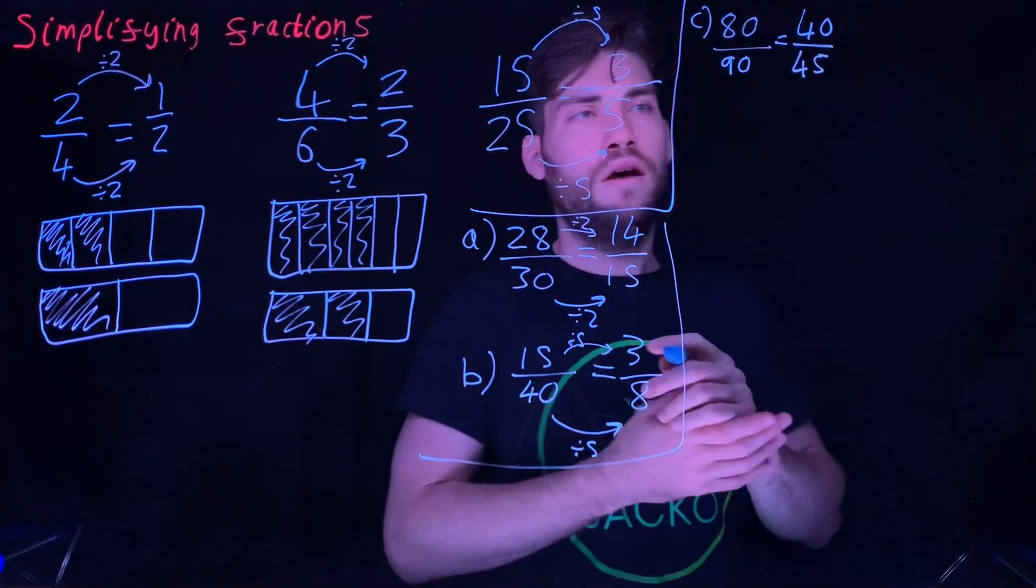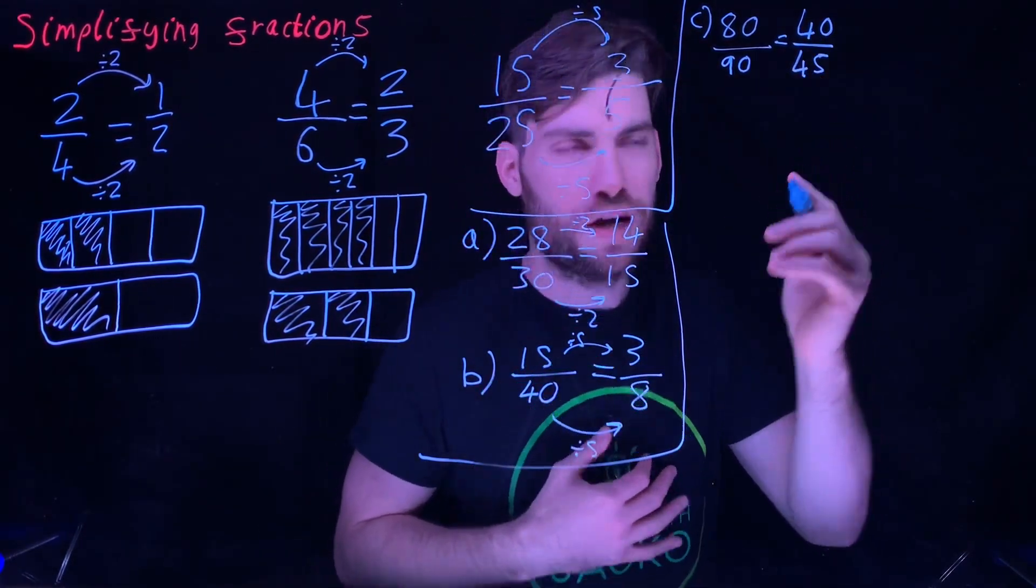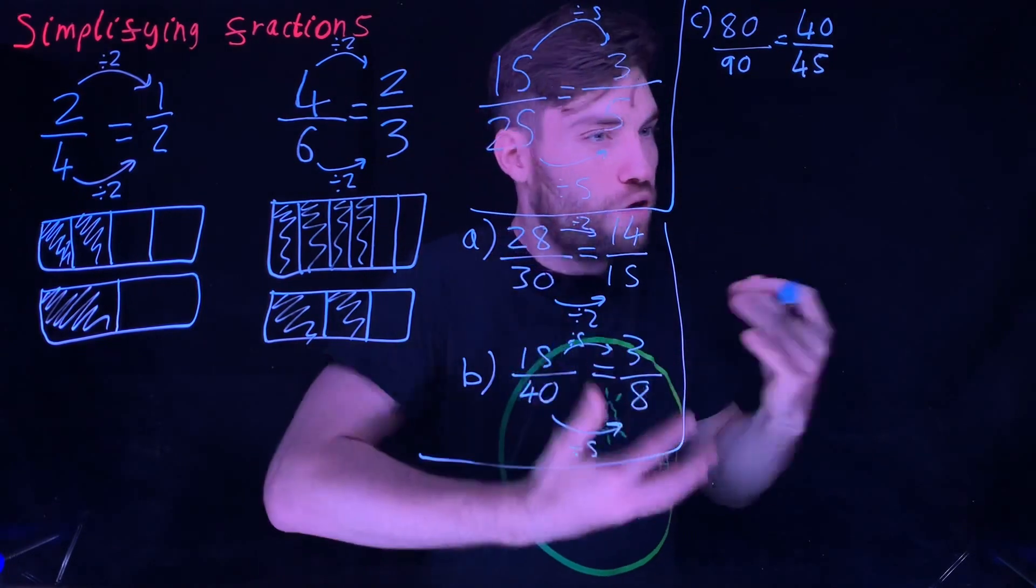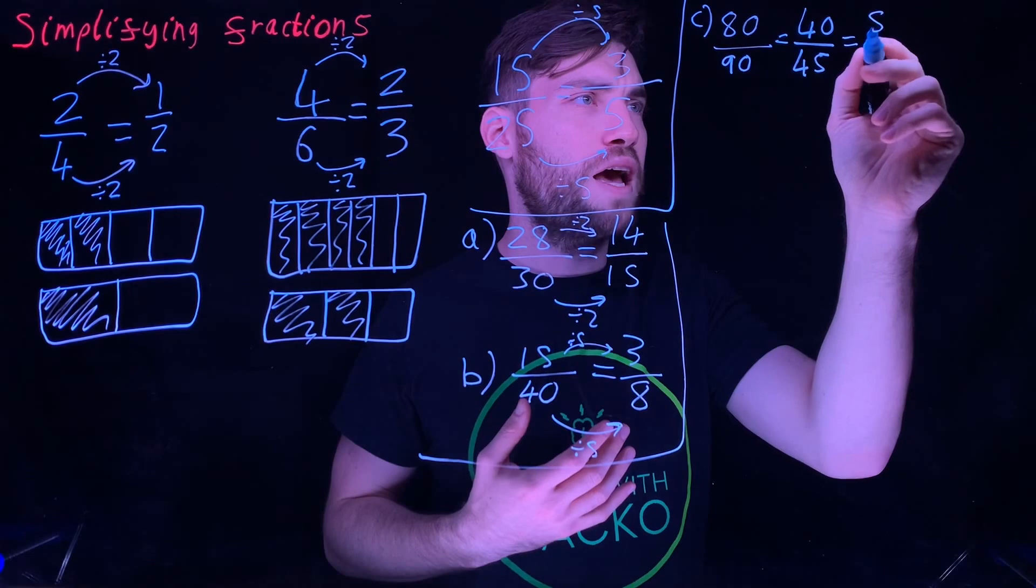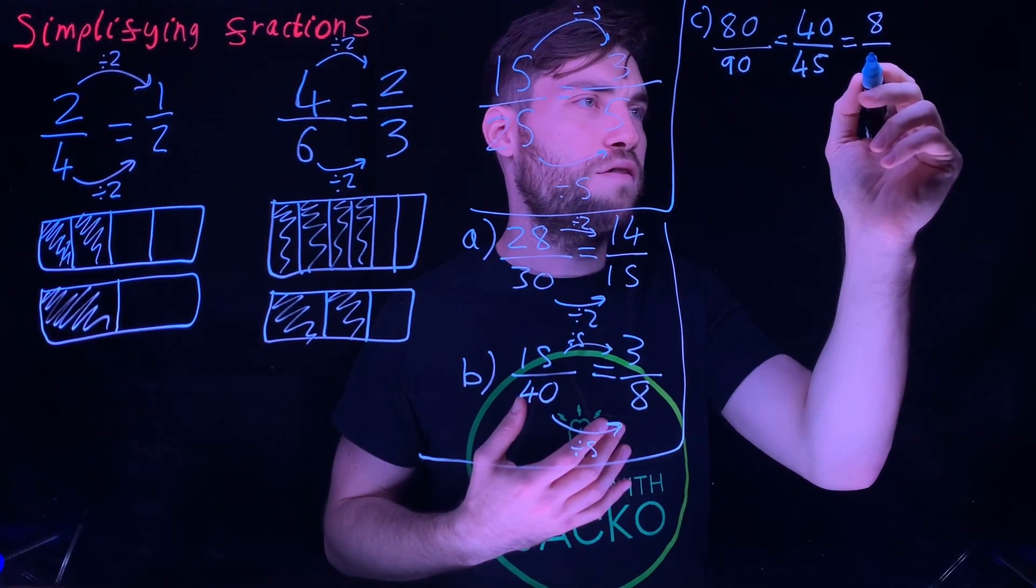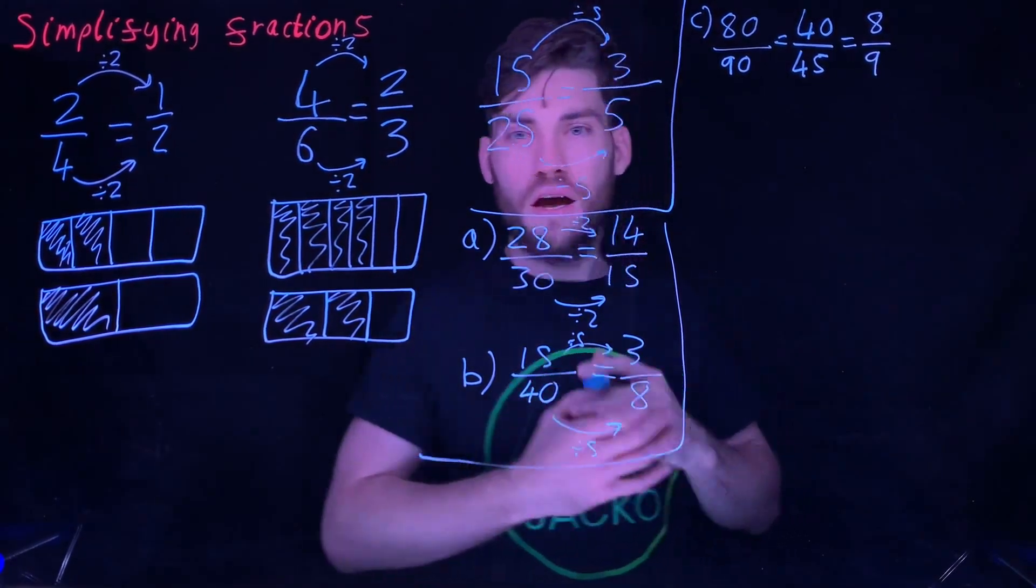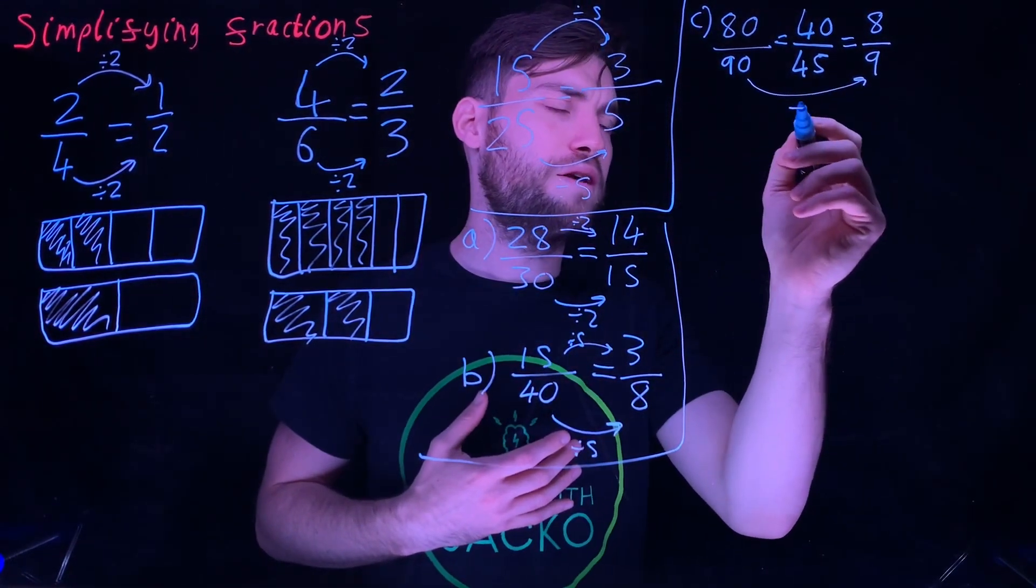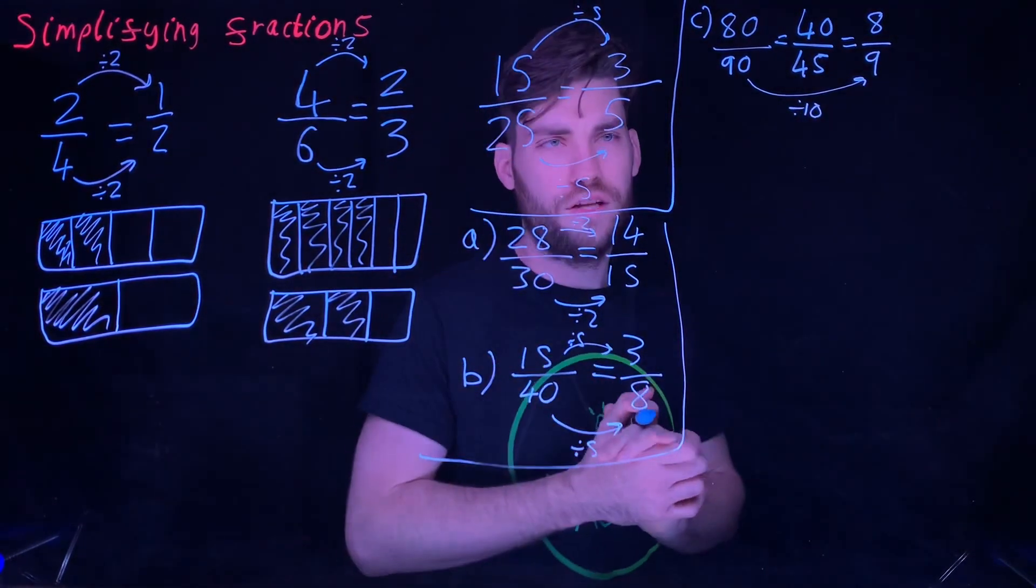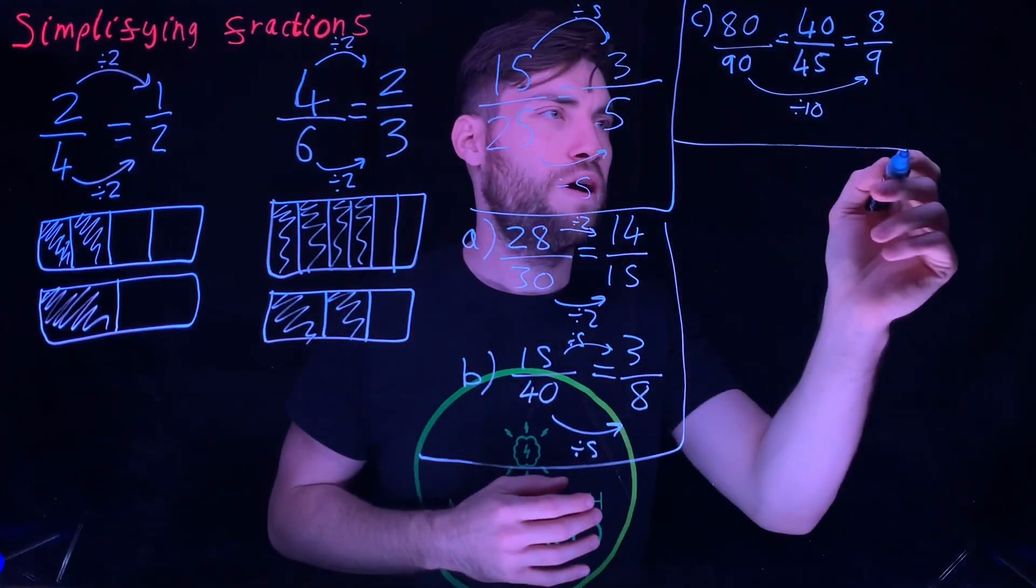Then you can think, what number goes into 40 and 45? Well, 45 is odd, so an even number can't go into an odd number. So 5 does. How many 5s go in 40? That's 8. How many 5s go in 45? That is 9. Another way to do it, you can go straight from that to that by dividing by 10. But that's another method to do it.